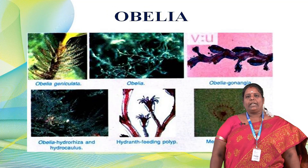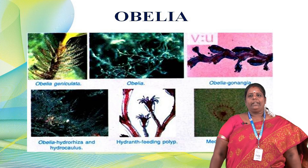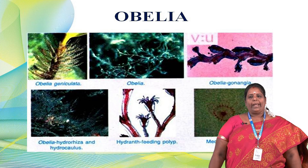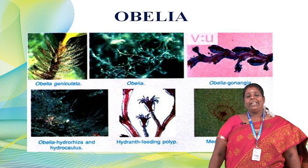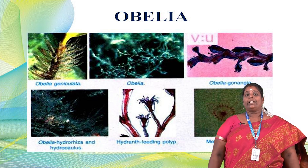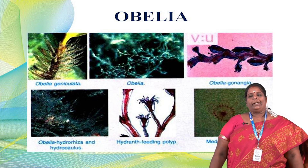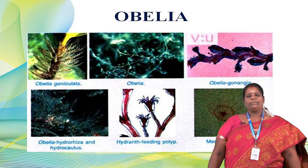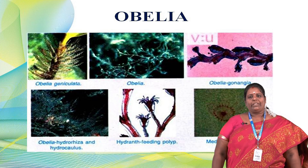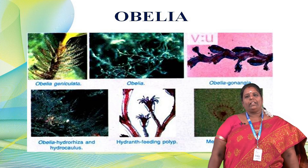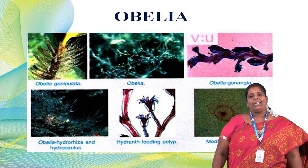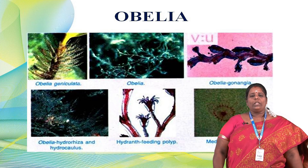This is the structure of Obelia — Obelia geniculata — which is an animal, not a plant. Obelia has a gongia, a hydrozoid, a feeding polyp, and medusae. The medusae is called the sexual zooid. There is a hydrocallus — meaning the formation of tentacles and branches of the colony. Another part is the hydranne, which is used for feeding. Obelia feeds through the hydranne, taking in food material through the polyp.